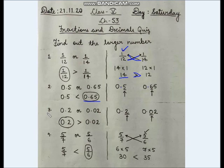Question number 3: 0.2 or 0.02. After the decimal point, the first digit is 2 for 0.2 and 0 for 0.02. So 0.2 will be greater.